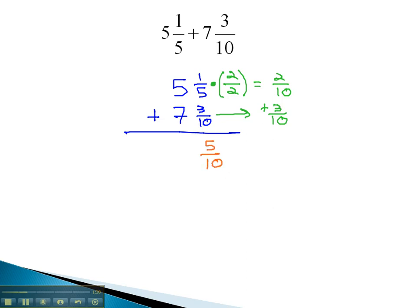And then finally, we can add the whole numbers, 5 plus 7 is 12. Of course, we always want our final answer reduced, and those 5 tenths can be reduced, by dividing the numerator and denominator by 5, giving us 12 and 1 half for our final solution.